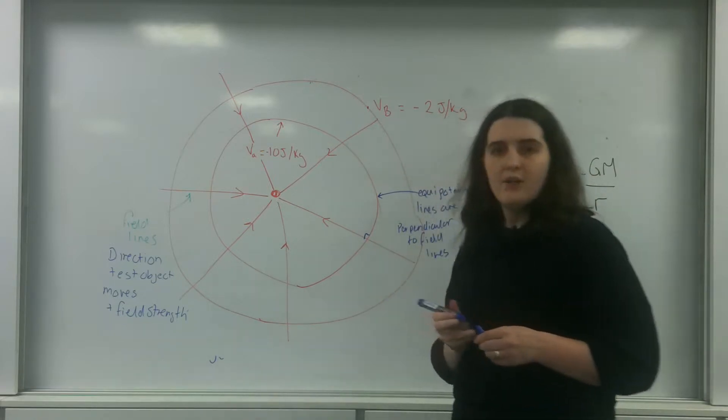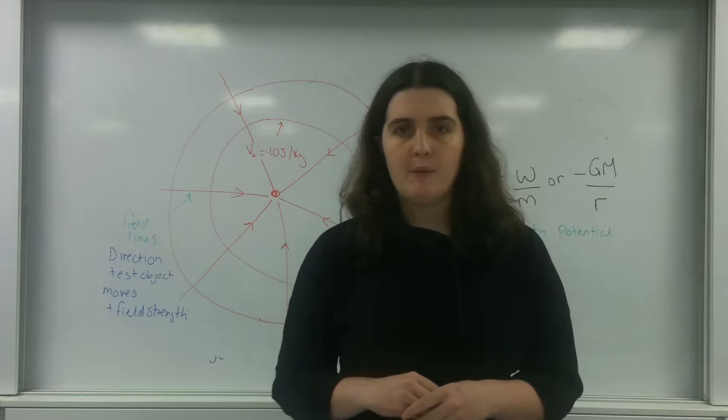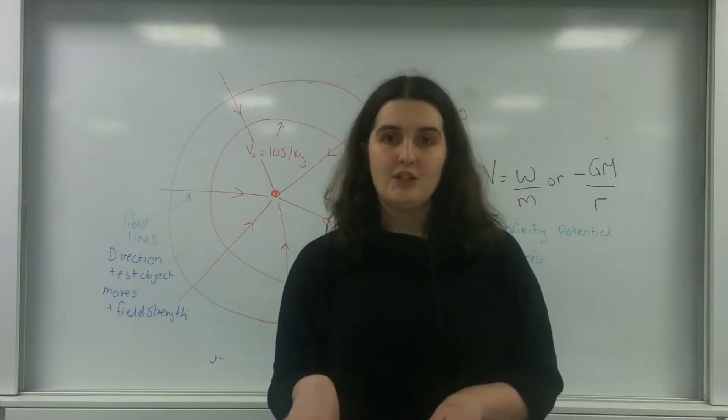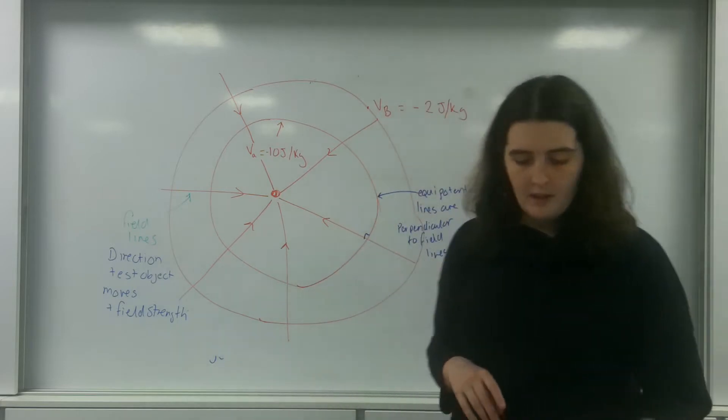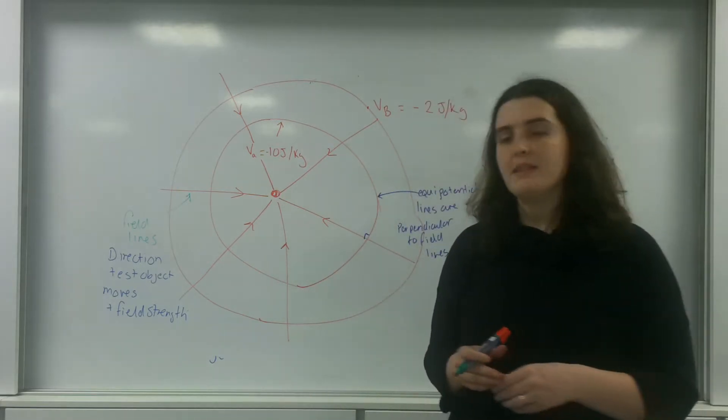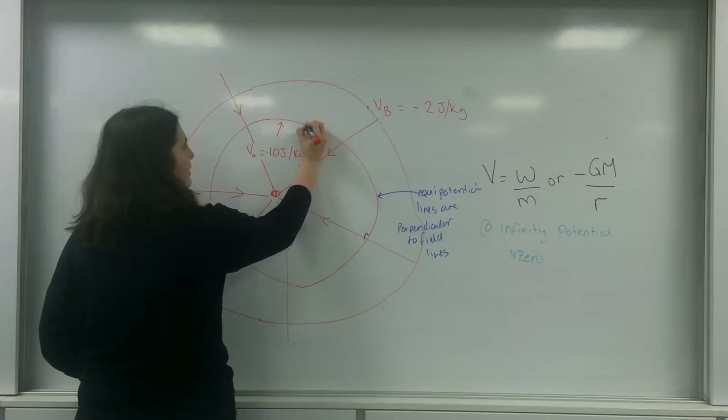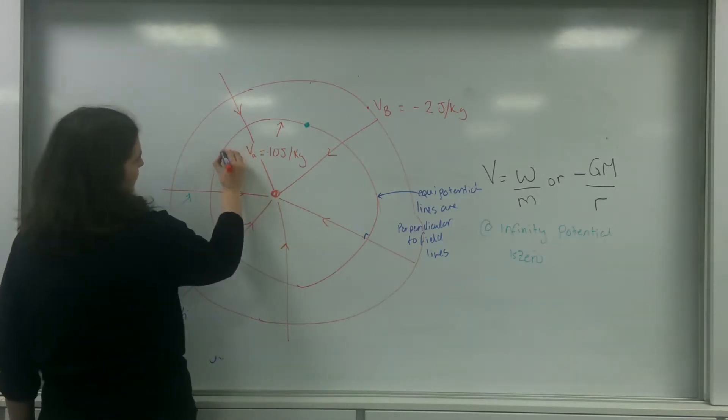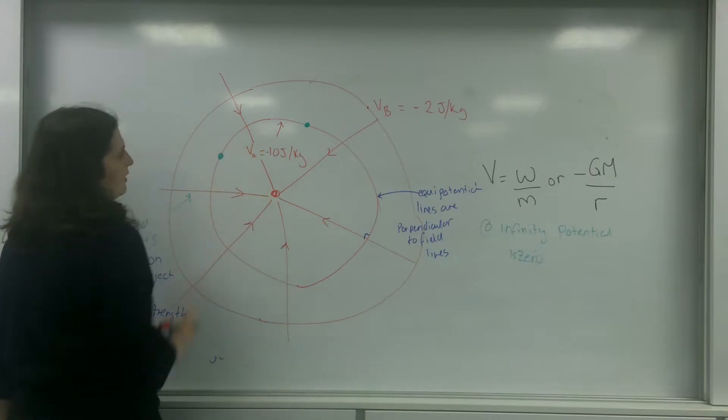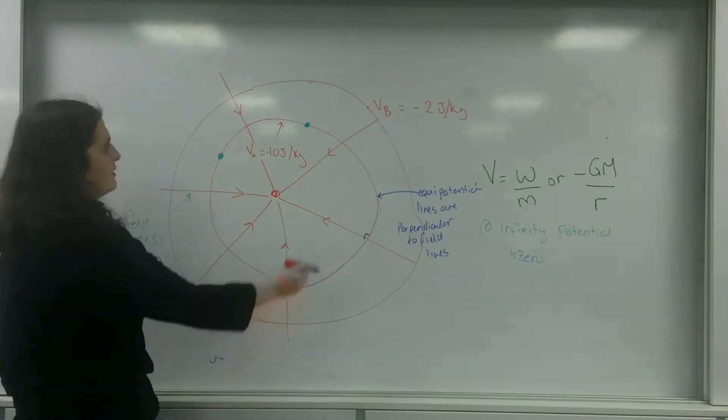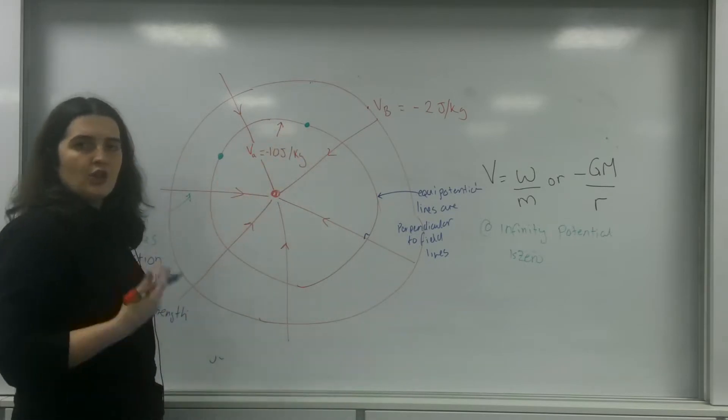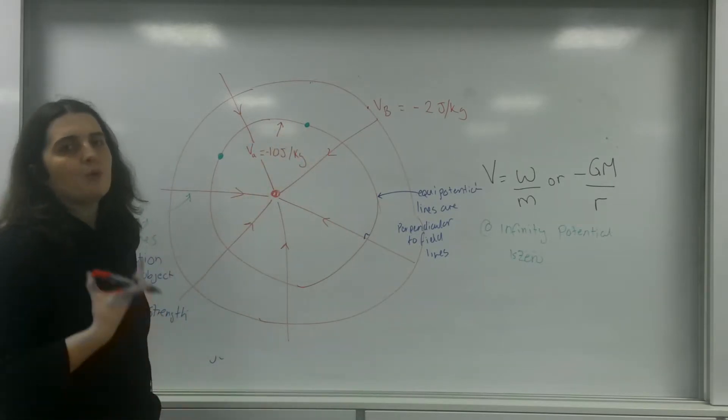And what it means is that an object on those equipotential lines, they do not require any energy to move it from one point to another. So, or any change in potential. So this object here, if I had an object here and an object here, if I was going to move this to the same place in the field, that requires no change in potential energy.